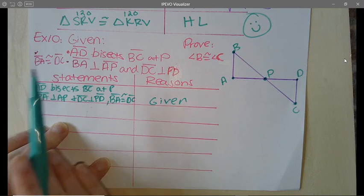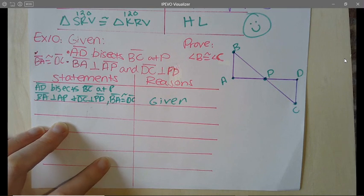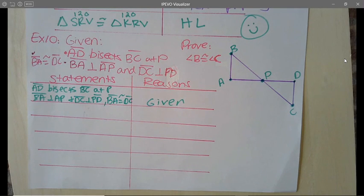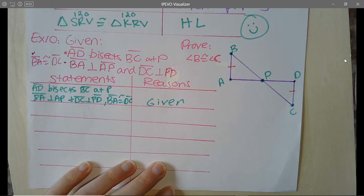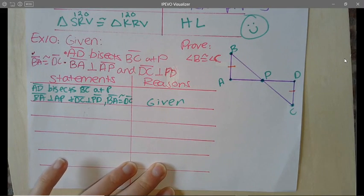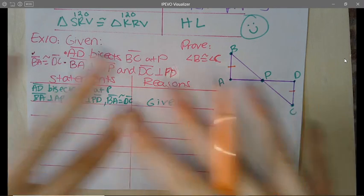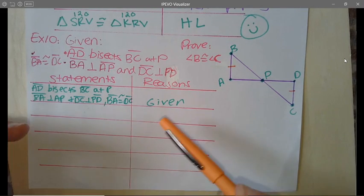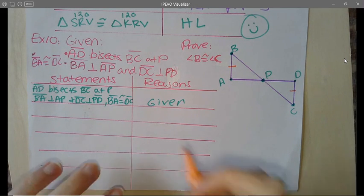The only thing I can mark congruent right now is that BA is congruent to DC, since it was given. I'll mark that in my picture. Remember, grabbing things from the given is always helpful when writing a proof. Do you spot anything else that might help write an additional line?